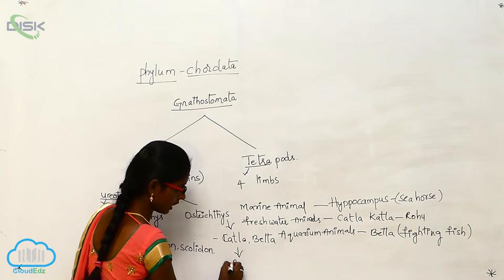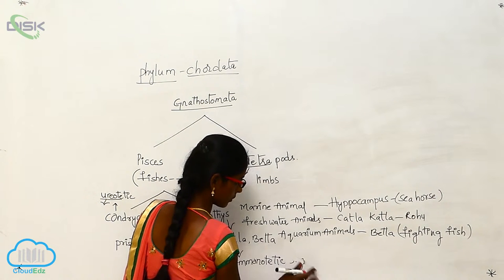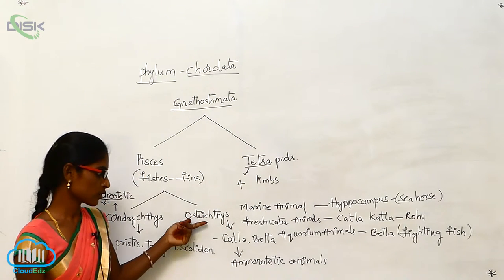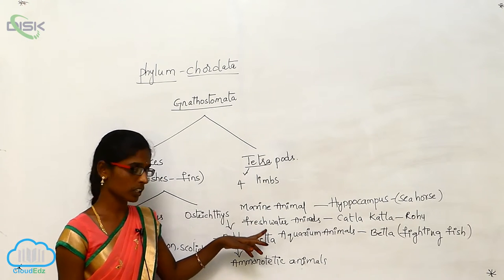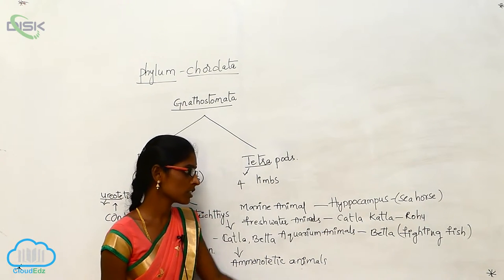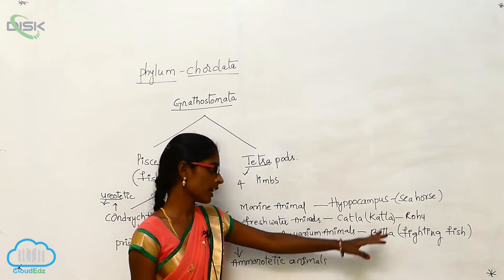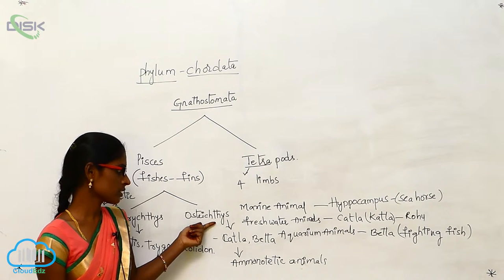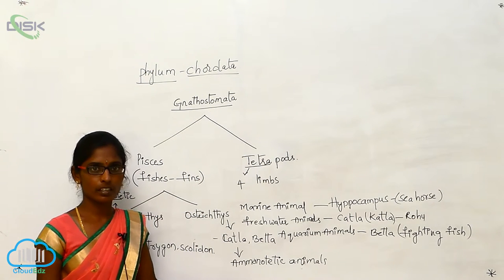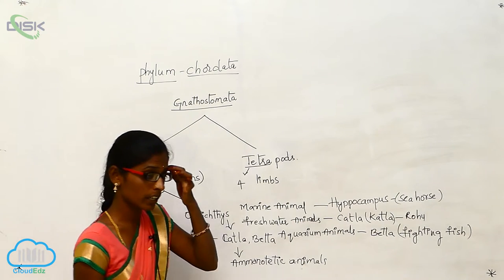Osteichthyes animals are ammonotelic organisms. Ammonotelic organisms excrete their waste material as ammonia. Next is Tetrapods.